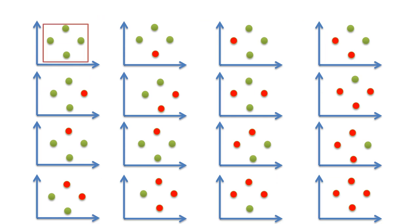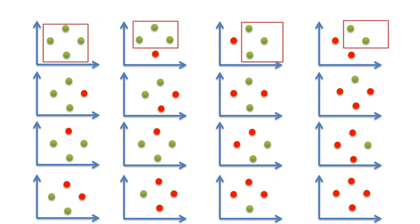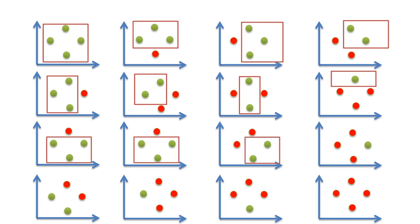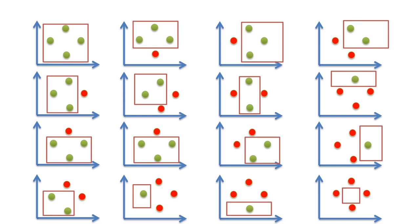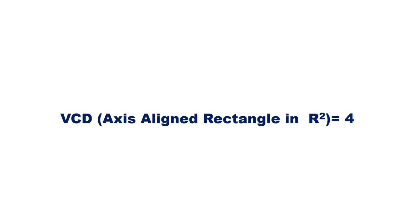Consider four points. Cases one through sixteen are all possible for an axis-aligned rectangle — every combination of positive and negative labels can be correctly realized. Hence, an axis-aligned rectangle can shatter four points on a two-dimensional plane. We cannot find any set of five points that can be shattered by an axis-aligned rectangle. Since four is the maximum number of data points that can be shattered by an axis-aligned rectangle, the VC dimension of an axis-aligned rectangle in a two-dimensional plane is four.